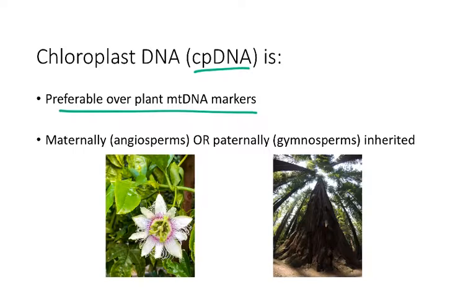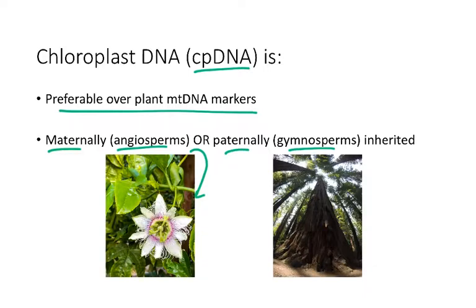Which parent plant the chloroplast DNA comes from actually depends on what type of plant you are. If you're an angiosperm — a flowering plant — your chloroplast DNA is inherited from the maternal side. In contrast, if you're a gymnosperm, like a conifer, your chloroplast DNA is inherited from your paternal plant. It's important to keep that in mind, because when doing studies using chloroplast markers, you need to understand what evolutionary patterns the data will give you depending on whether the chloroplast DNA came from the maternal or paternal plant.